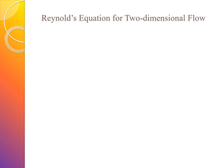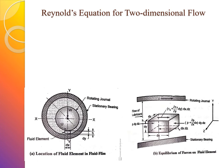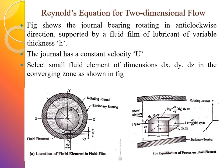We will see the derivation of the Reynolds equation for two-dimensional flow. There are two figures: the location of a fluid element in the fluid film, and the equilibrium of forces on that fluid element. The figure shows the journal bearing rotating in the anti-clockwise direction, supported by a fluid film of lubricant of variable thickness h. The journal has a constant velocity U.